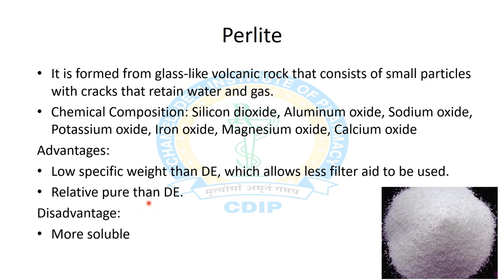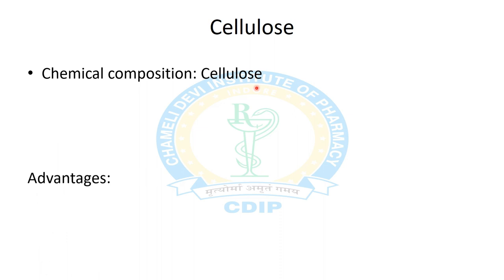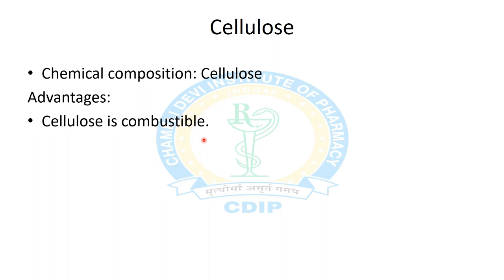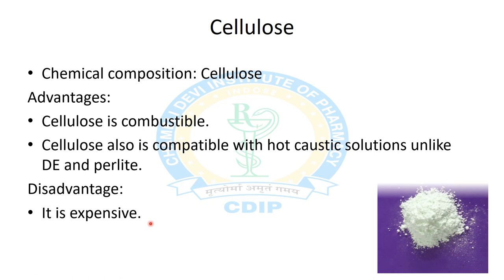The next filter aid is cellulose. Its chemical composition is cellulose. Advantages: it is combustible, which is important for recovery of valuable metals, and it is compatible with hot caustic solutions — unlike diatomite and perlite, which cannot be used when filtering hot caustic solutions. Disadvantage: it is expensive.